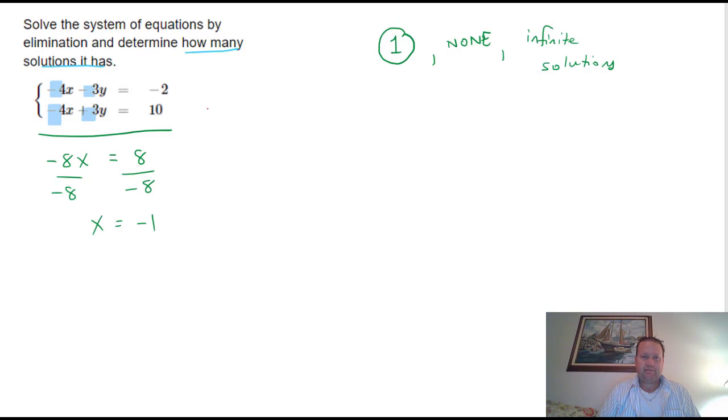Negative 4 times x is negative 4 times negative 1. That's negative 4x plus 3y equals 10. If I take away a 4 on both sides, I get 3y is equal to 6. And if I divide by 3, y is 2.